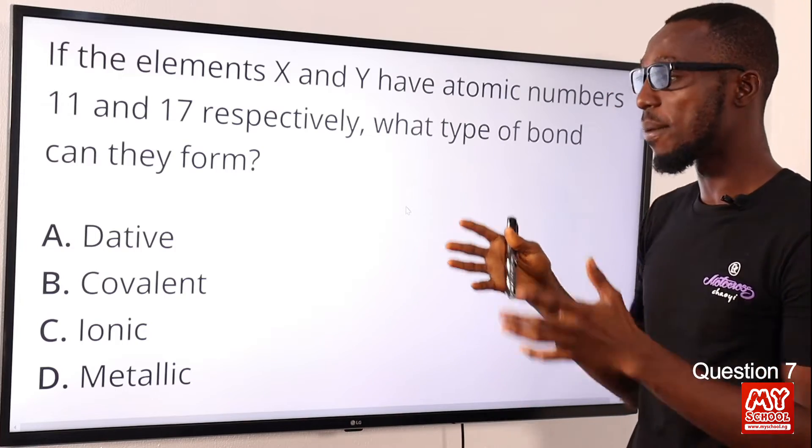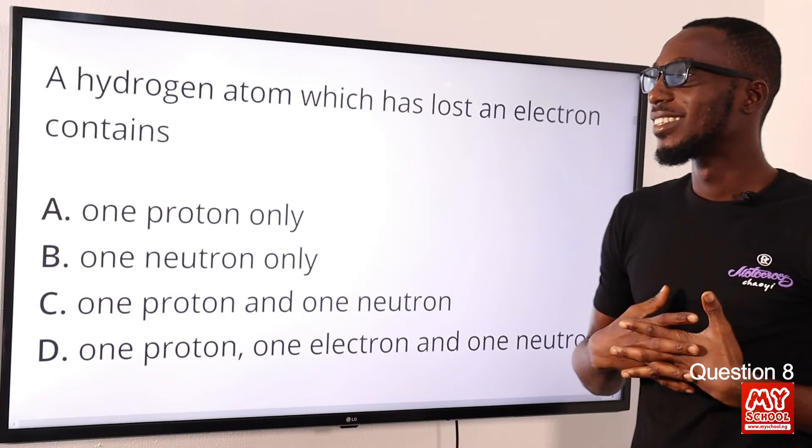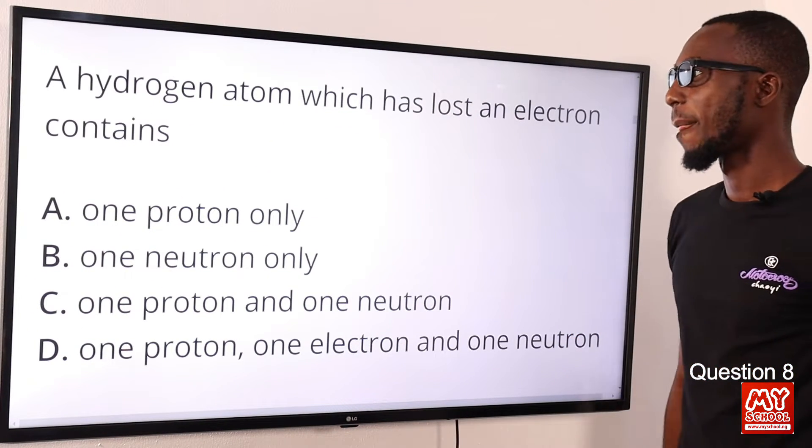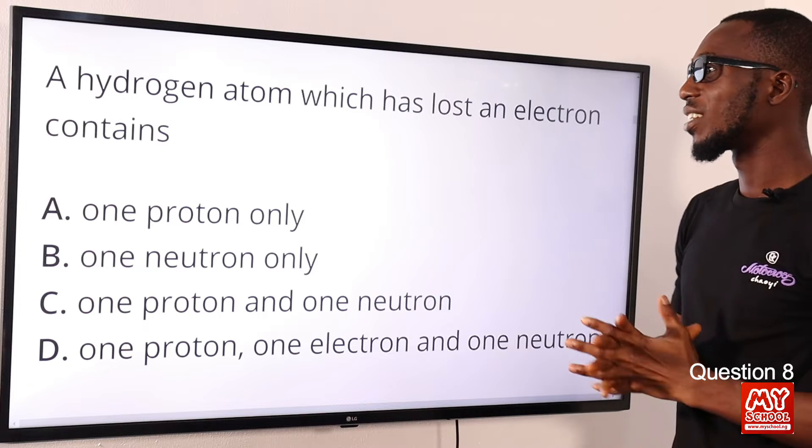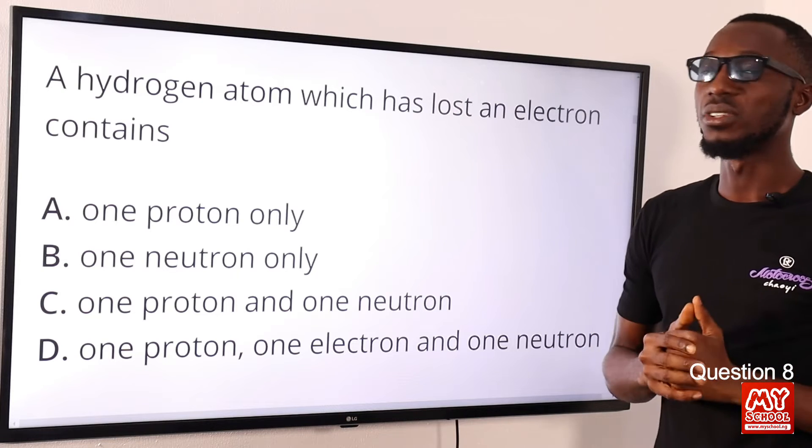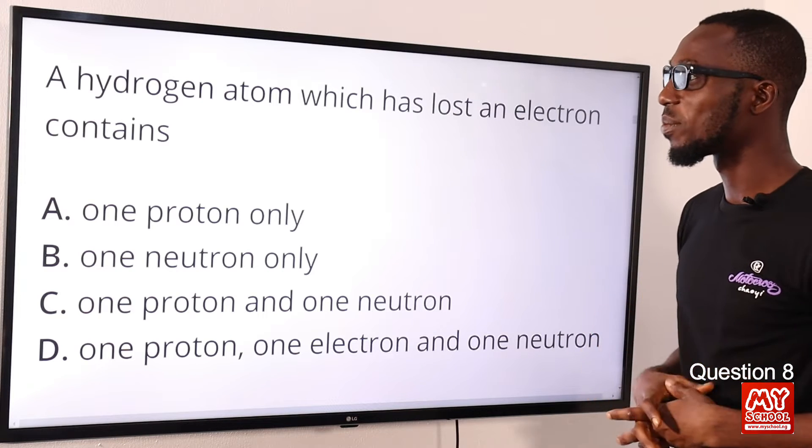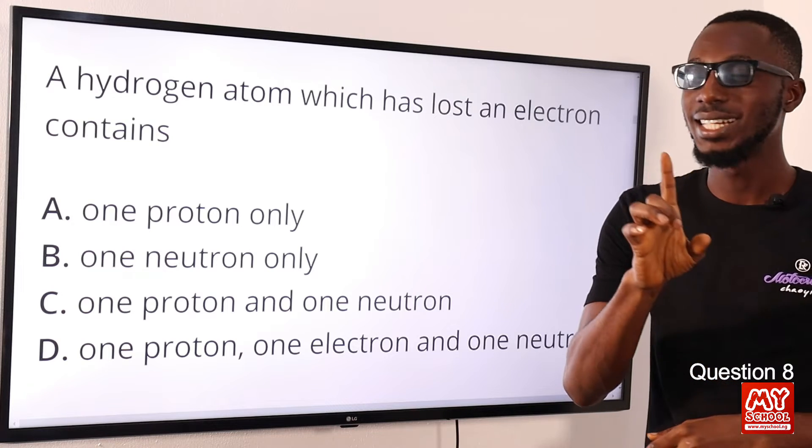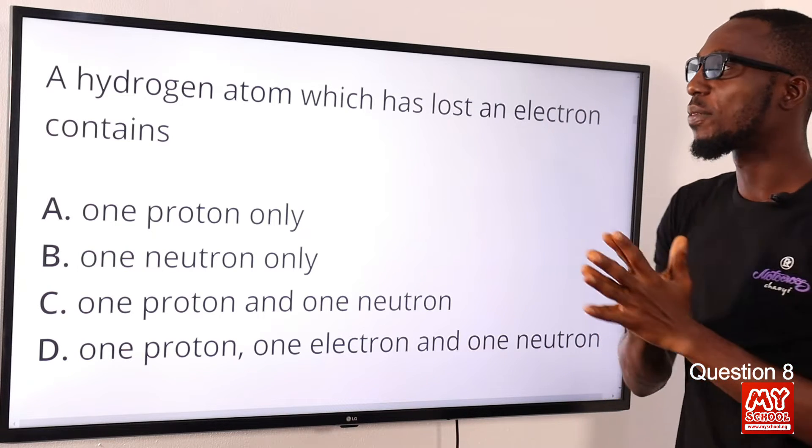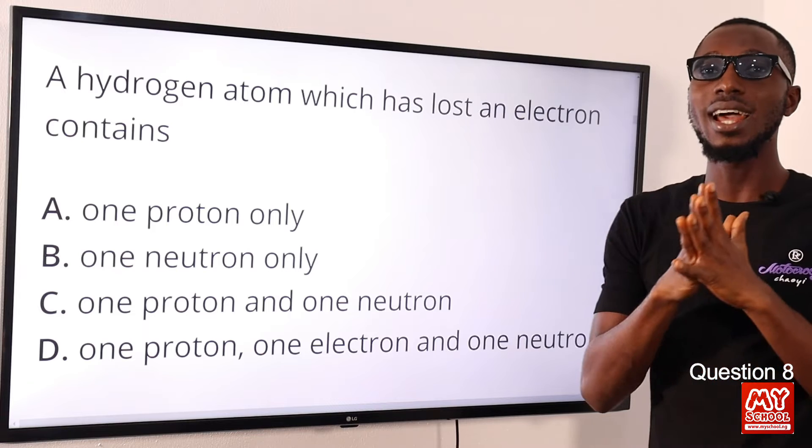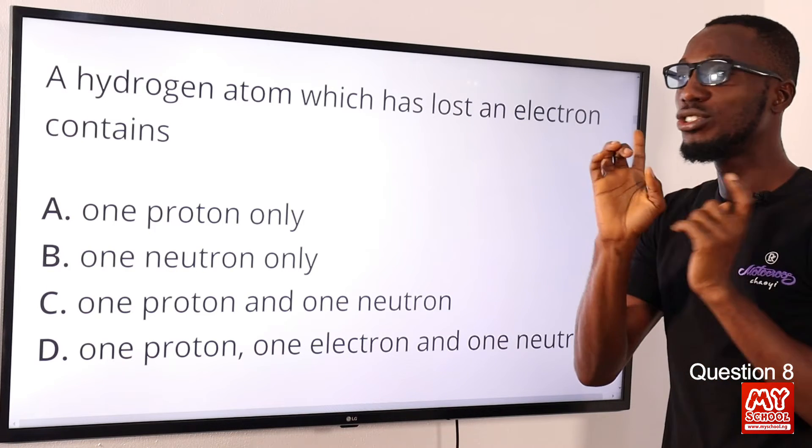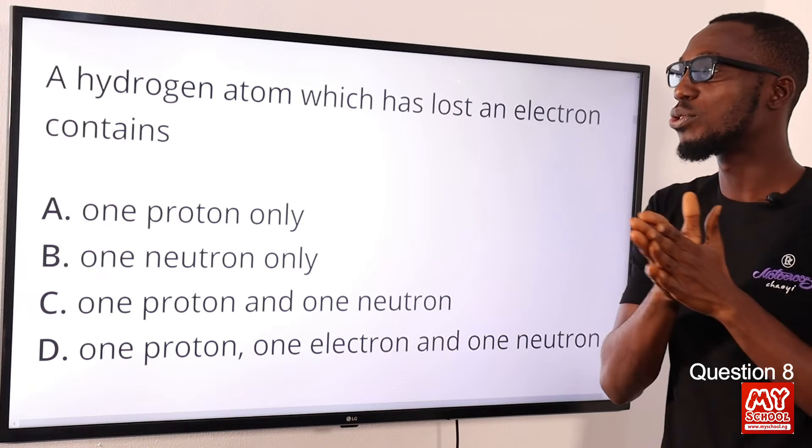Question 8: A hydrogen atom has lost an electron. This atom that has lost an electron contains what? When you talk about a hydrogen atom, we know it has the atomic number of one, and proton number is the same as atomic number. For hydrogen, the atomic mass is one, so that tells you that neutron is absent, except you want to consider the other isotopes of hydrogen like deuterium, tritium, and what have you.